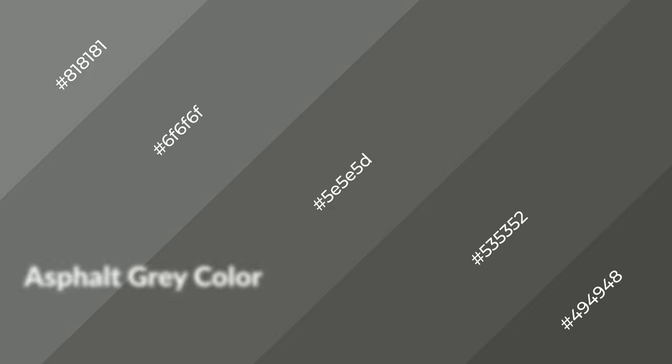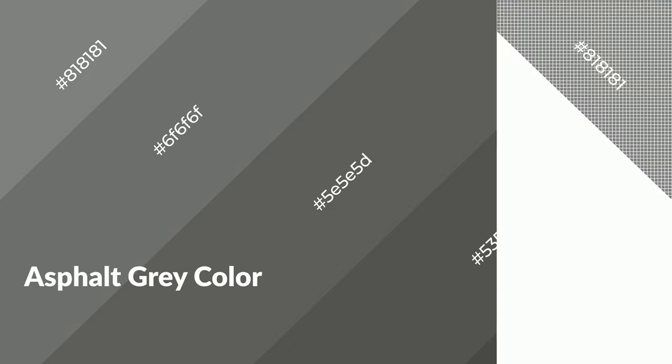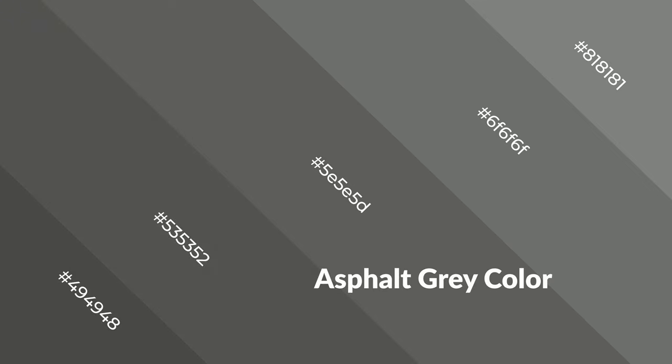Asphalt gray is a warm color and it emits cozier and active emotions. Warm colors are symbols of warmth, fire, heat, and sunshine. It also evokes joy, passion, love, and even anger. You can see them used in restaurants and gyms.